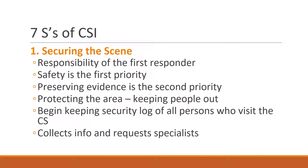There are seven S's of crime scene investigation. The first is securing the scene — this is the responsibility of the first responder. The first priority is safety: is the scene safe? The second priority is preserving evidence. They protect the area, keep people out so the crime scene is not tampered with, begin keeping a security log of all people who visit the crime scene, and collect info and request specialists as needed.